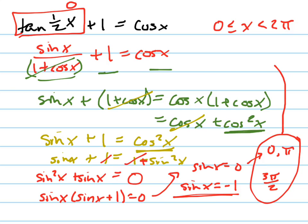The tangent of 0, one half of 0 is 0. The tangent of 0 is just 0. 0 plus 1 is 1, and the cosine of 0 is 1, so that checks out.